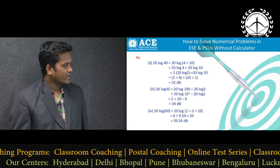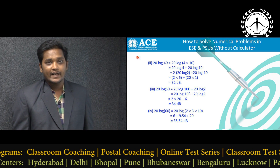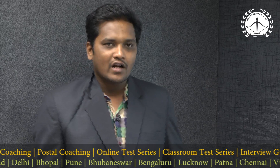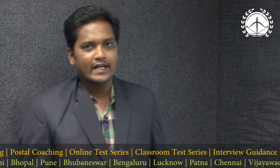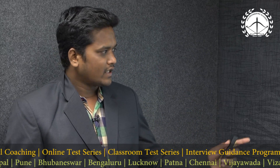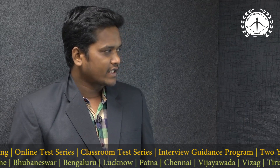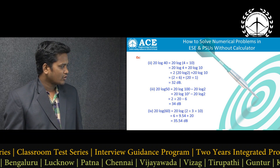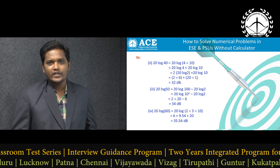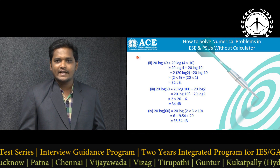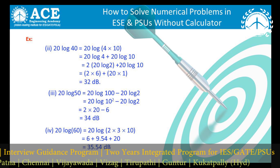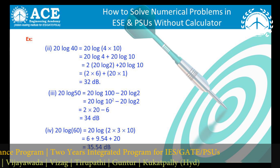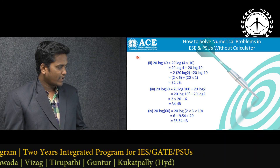Third example: 20 log 50. Write 50 as 100/2, so using log(a/b) = log(a) − log(b): 20 log 100 − 20 log 2. Since 100 = 10², this becomes 2 × 20 log 10 − 20 log 2 = 40 − 6 = 34 dB. Fourth example: 20 log 60. Write 60 as 2 × 3 × 10, so 20 log 2 + 20 log 3 + 20 log 10 = 6 + 9.54 + 20 = 35.54 dB.